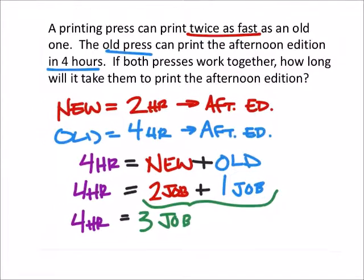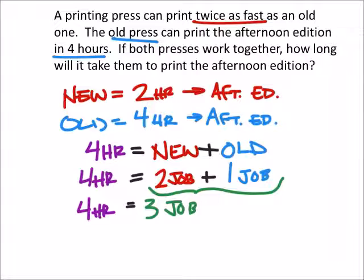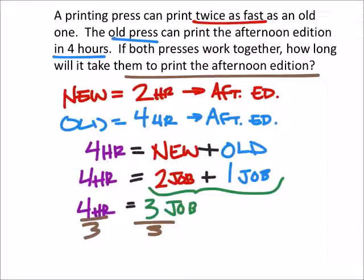What we really want to know, though, and that's based on the question up here, is how long it takes both of them to print one job, right? Now, we know in four hours, we can get three jobs out of that. So if I wanted one job, I would just divide both these by three, and that would tell me how long it takes to do one job.